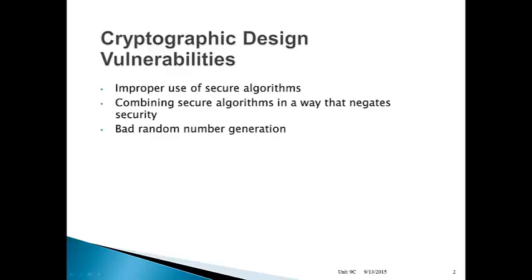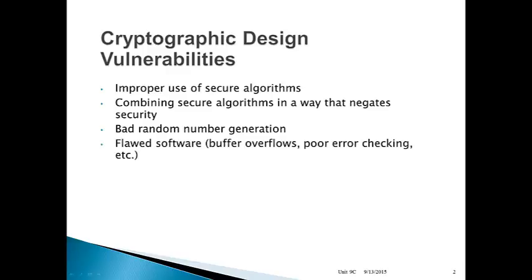Cryptography relies a lot on random number generation. Make sure that you're generating good, solid, strong random numbers, not predictable sequences of numbers that may be statistically random, which is what a lot of random number generators actually do. Cryptography is implemented by software, and this software is subject to all the flaws that any other software may be subject to. If your cryptographic system has buffer overflows, doesn't check for errors, and so on, then you've got a problem that affects your ability to do cryptography right.